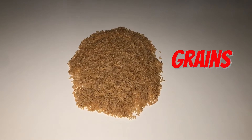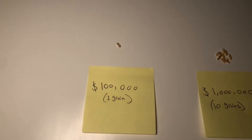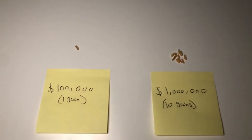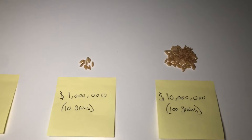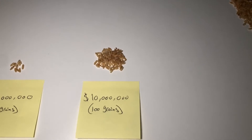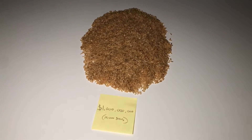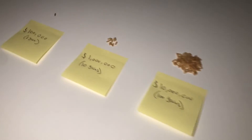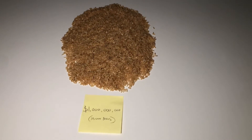Here's 10,000 grains of rice, and I'm going to show you how that represents $1 billion. One grain of rice equals $100,000. So 10 grains of rice would be $1 million, and 100 grains of rice would be $10 million. And then over here we have the 10,000 grains of rice, which is $1 billion. I always thought being a millionaire was a lot of money, and it is — but compared to 1 billion, that's absolutely nothing.